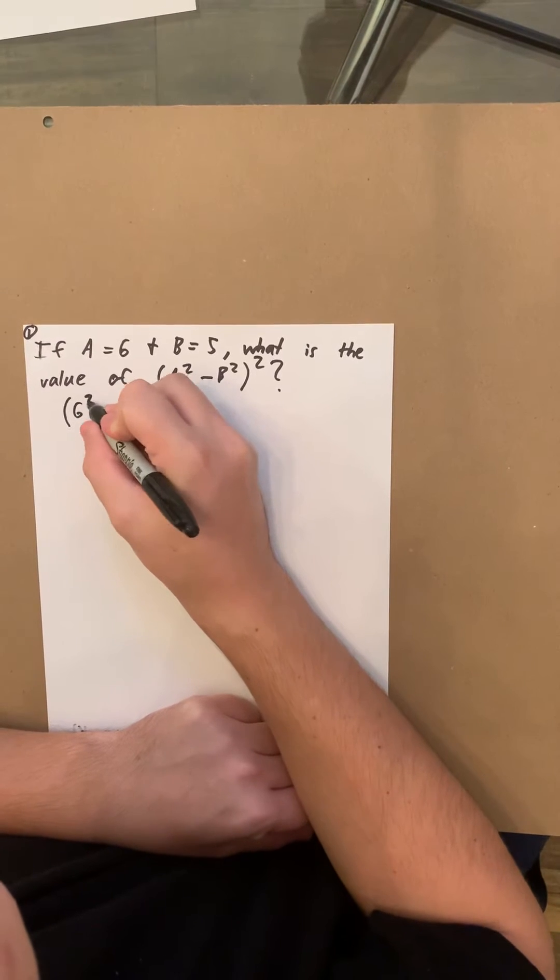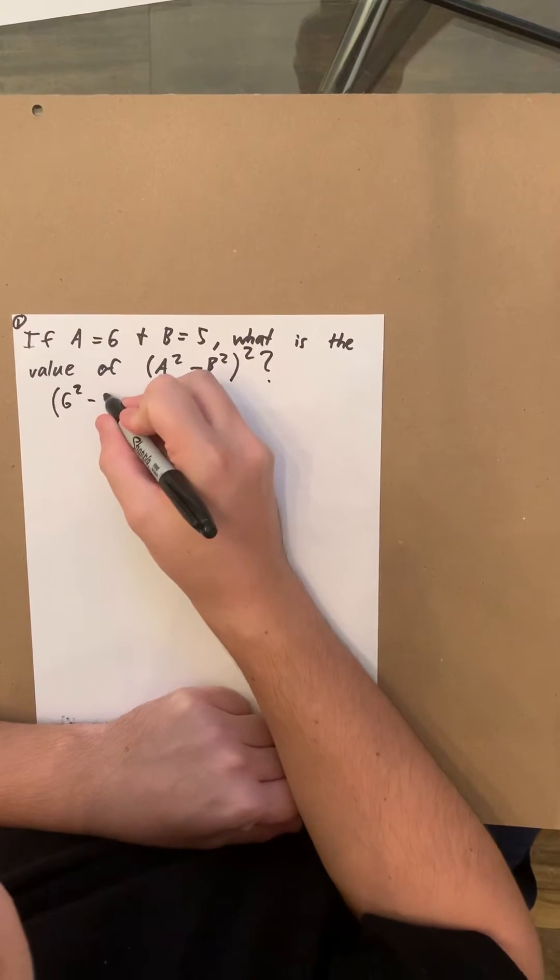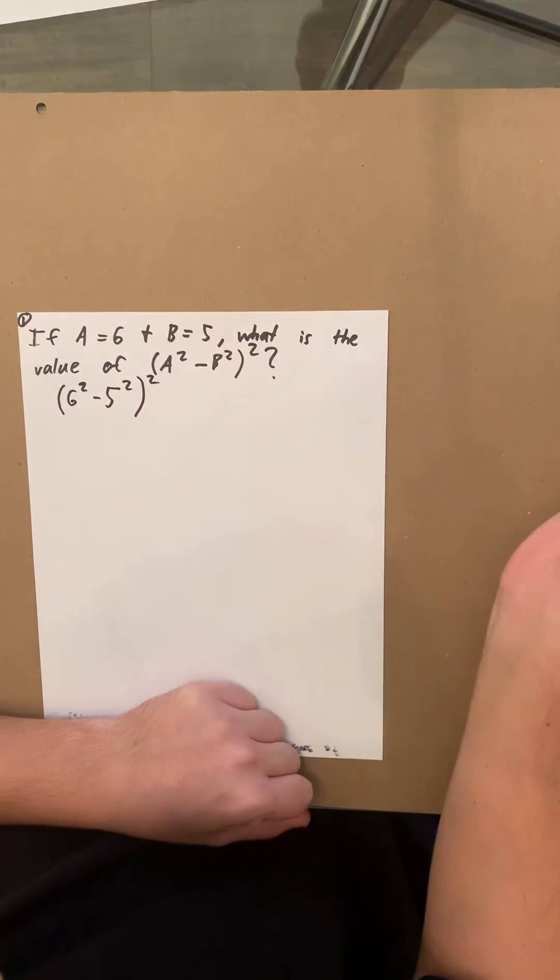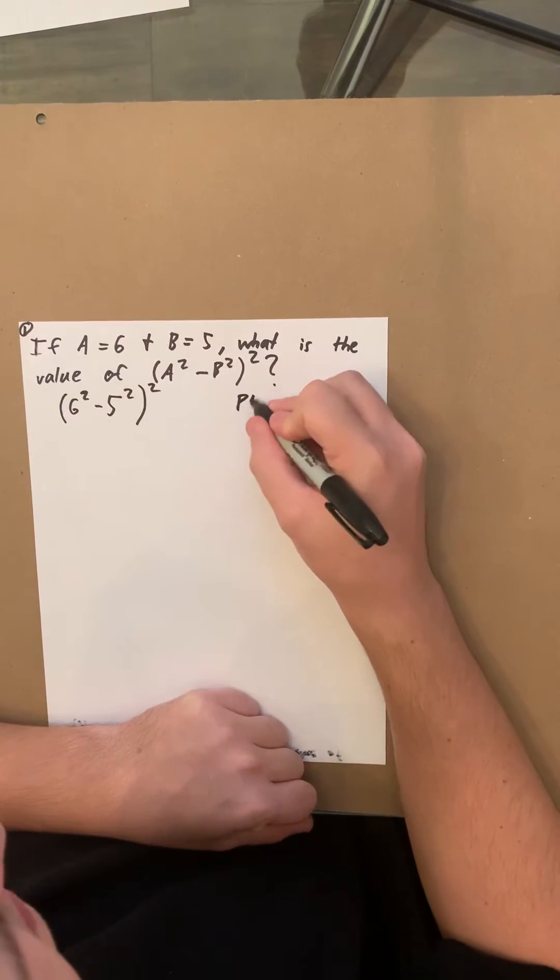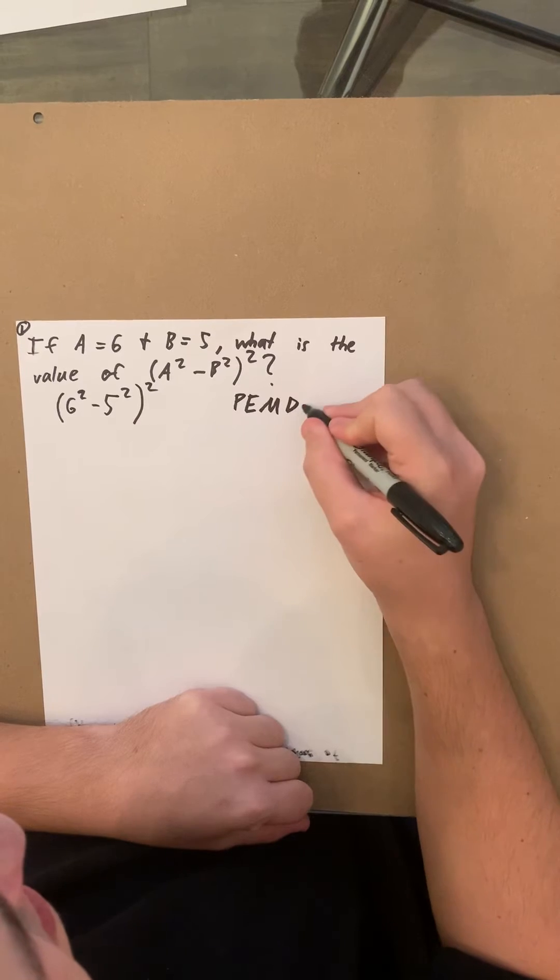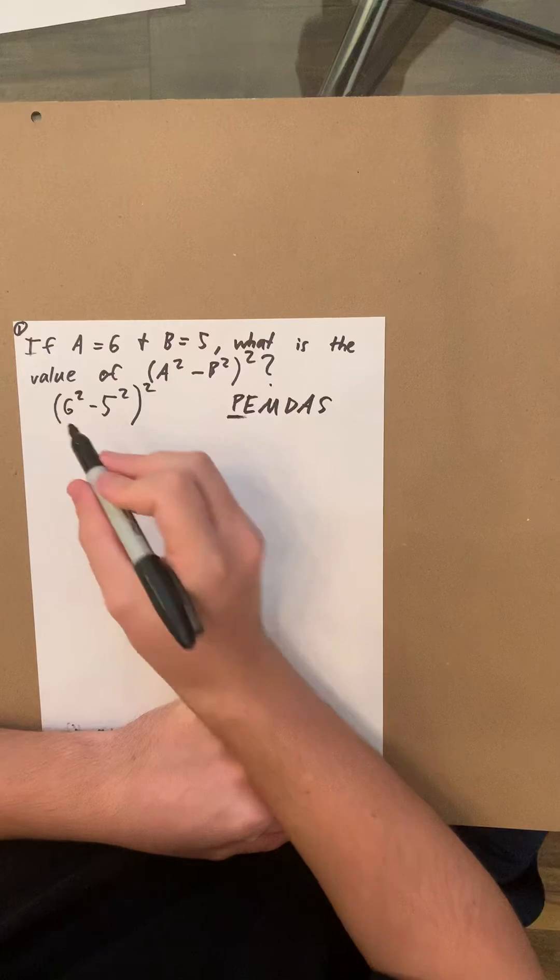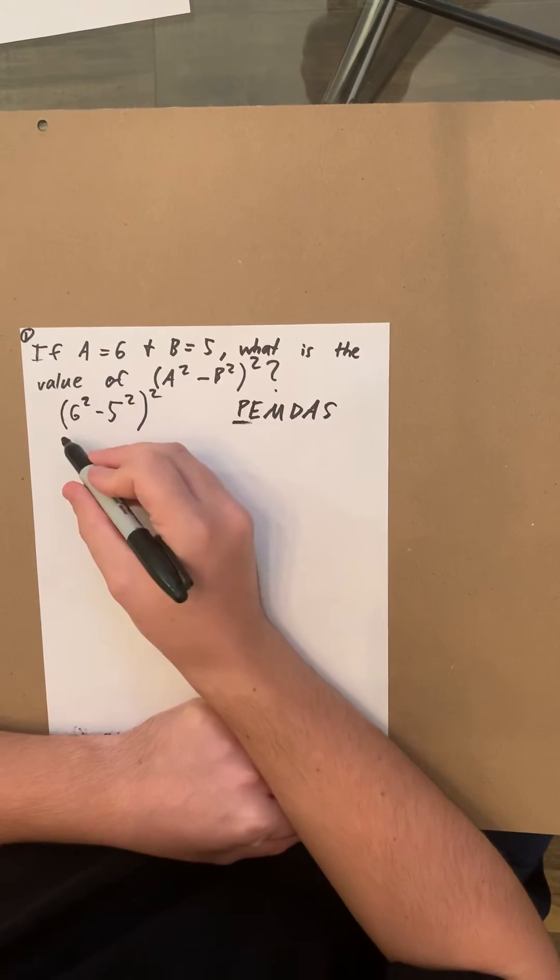So you're going to have 6 squared minus 5 squared squared. Now, if you remember PEMDAS, the first letter in PEMDAS is P for parentheses, so you're going to do what's inside the parentheses first.